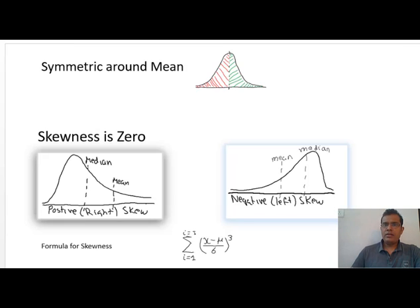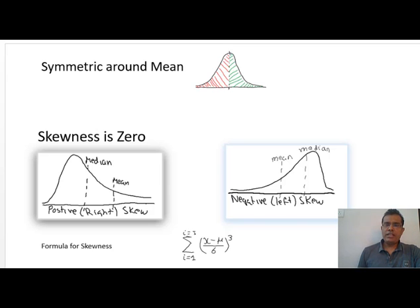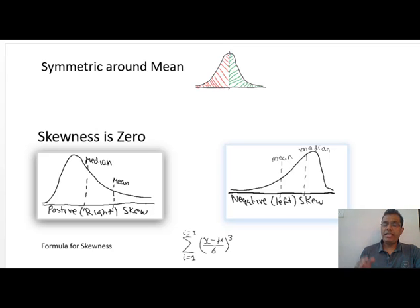What does symmetric around mean imply? In this graph you can see a dotted line representing the mean. The area on the left side of the mean and the right side of the mean — basically the red region and the green region — should be mirror images of each other. That's the ideal scenario. The area on the left side and the area on the right side of the mean should be the same, and skewness should be 0.